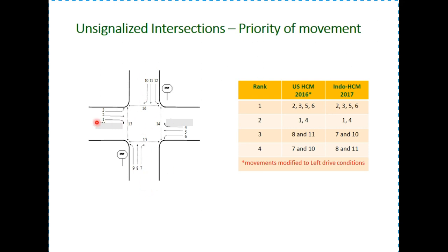The movements at the major streets are numbered from one to six. Movement one is the right turn from the left side and six is the left turn from the right side. The movements at the minor streets are numbered 7, 8, 9 on the northbound approach and 10, 11, 12 on the southbound approach. If there are pedestrians also, then 13 and 14 are on the major street and 15 and 16 are on the minor street.